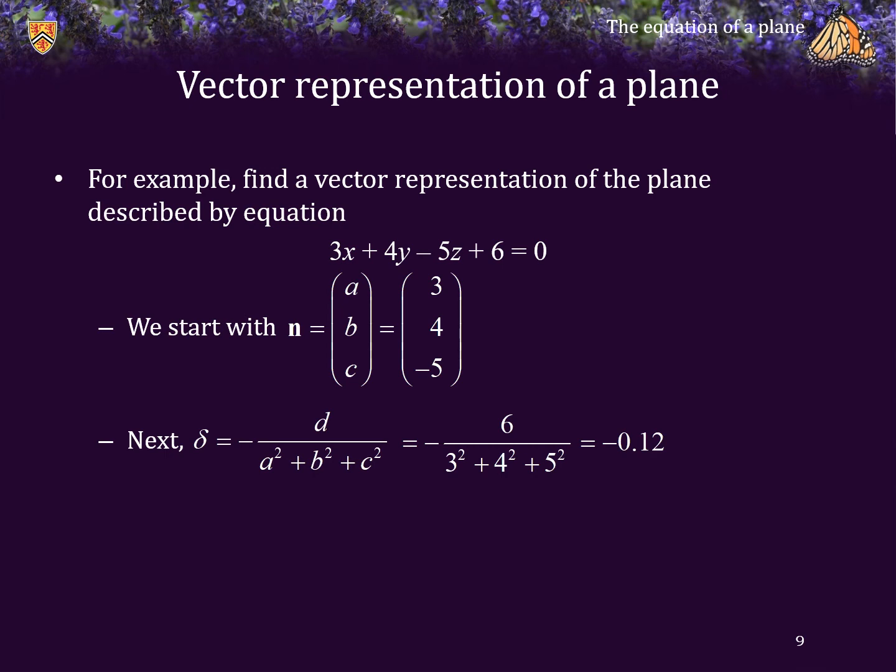Consequently, that evaluates to negative 0.12, and thus, u perp is just negative 0.12 times the normal vector 3, 4, negative 5, which gives us this vector negative 0.36, negative 0.48, and 0.6.